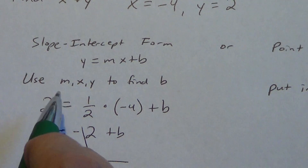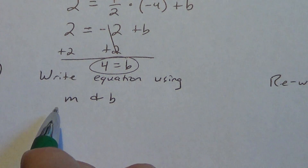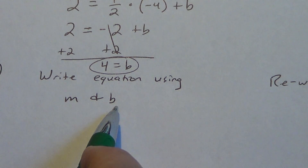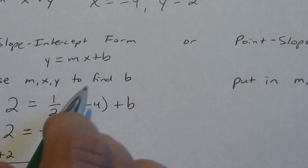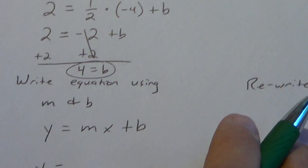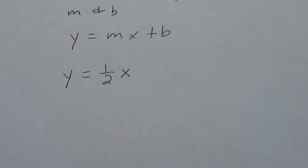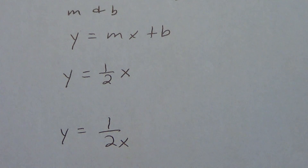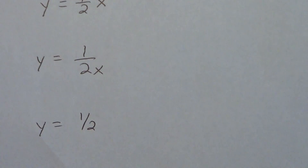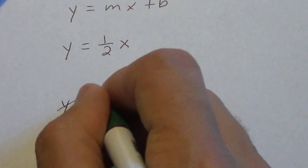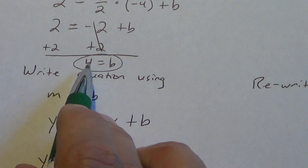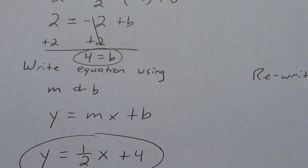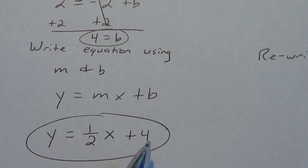Step four: write the equation using m and b. We don't use x and y's specific values anymore. y equals mx plus b, so y equals 1/2 x plus 4. Make sure x is clearly in the numerator — don't write it so it looks like x is in the denominator. And if b had been negative 5, don't write plus negative 5— just write minus 5.